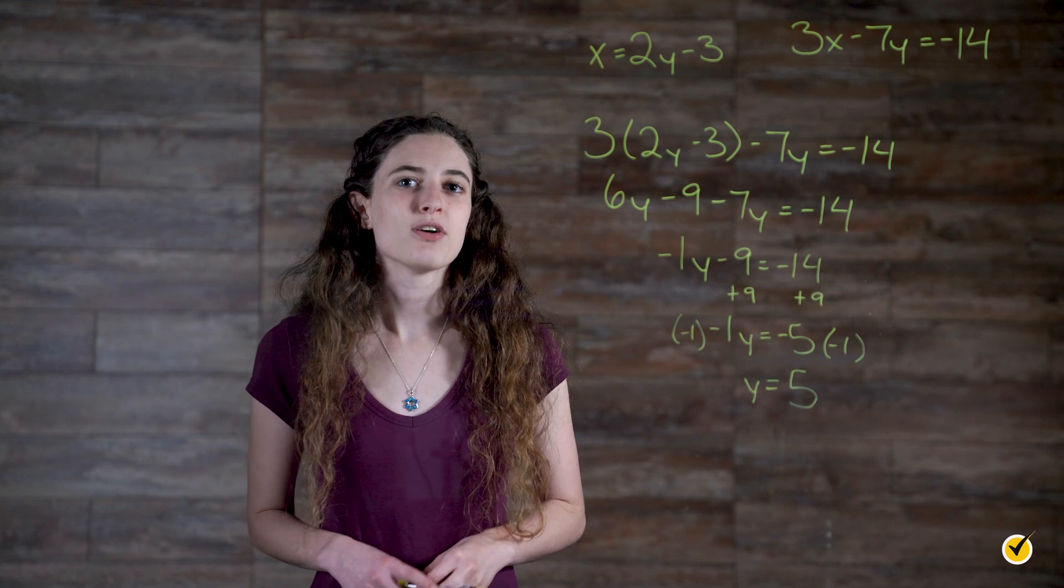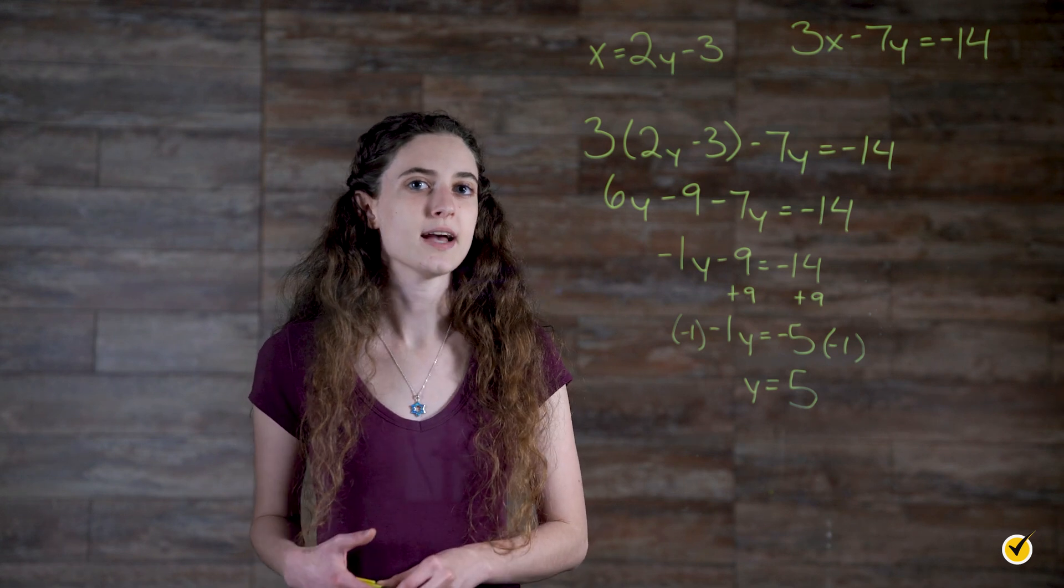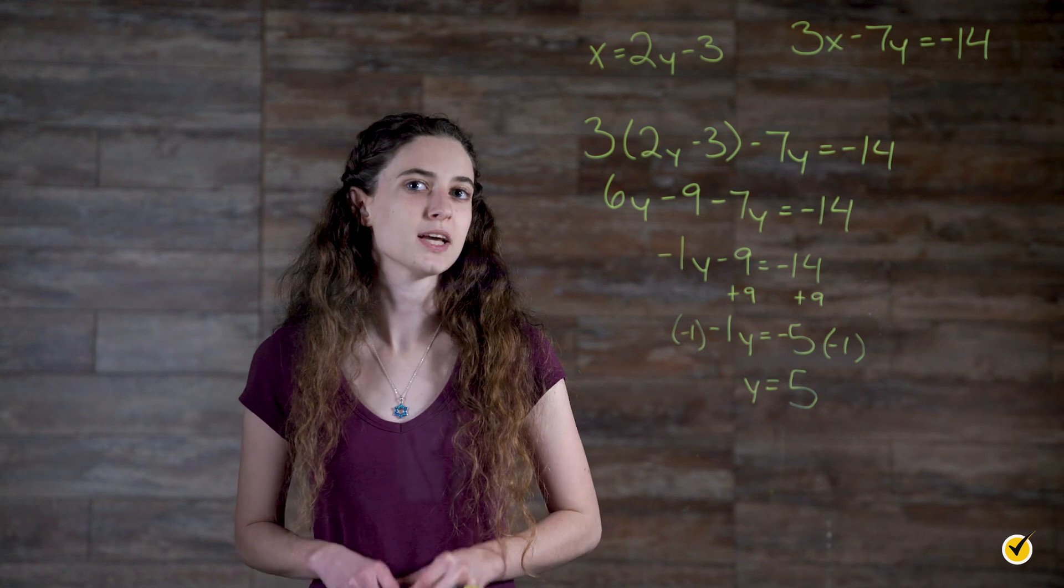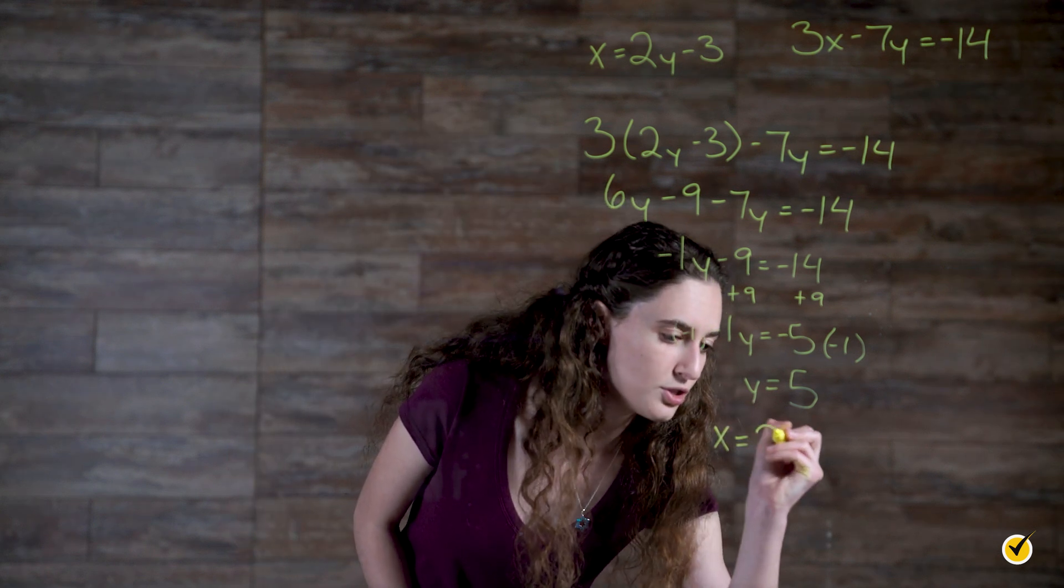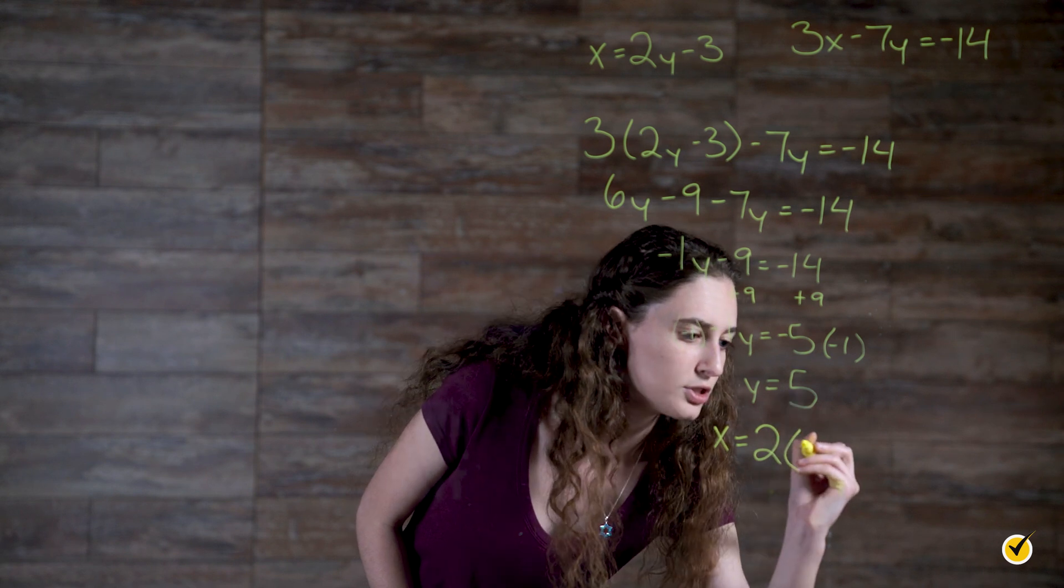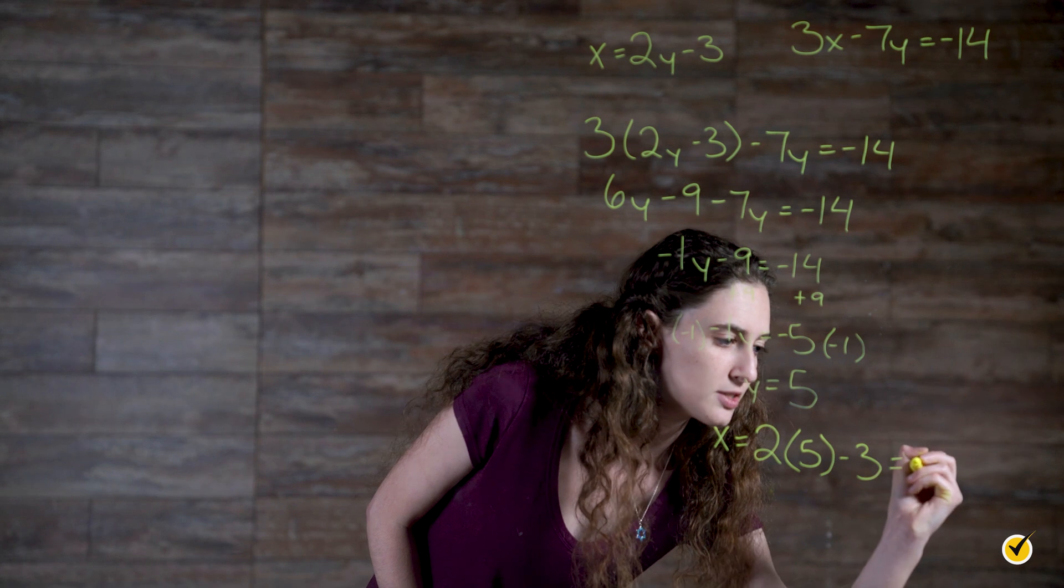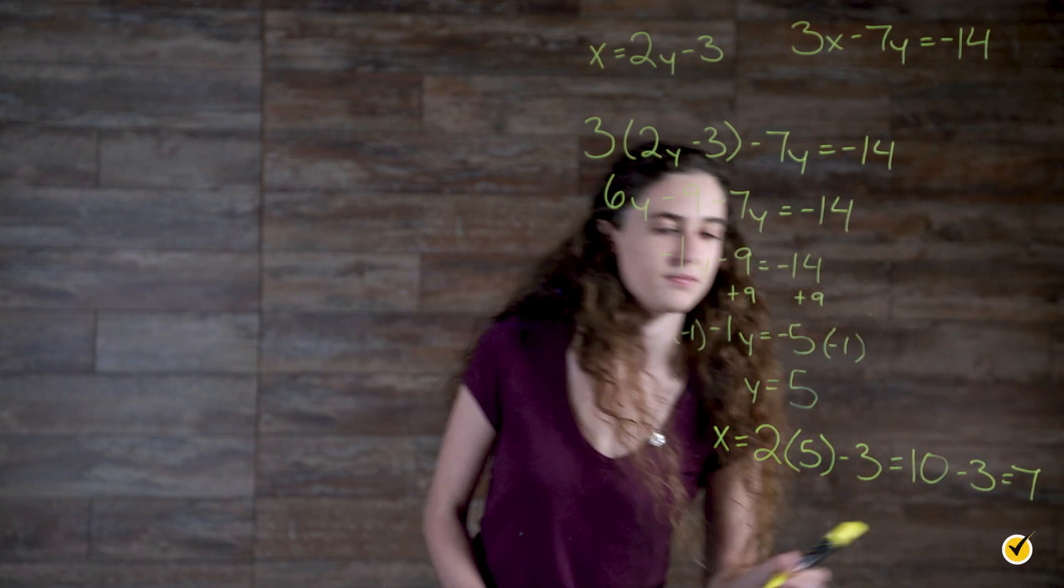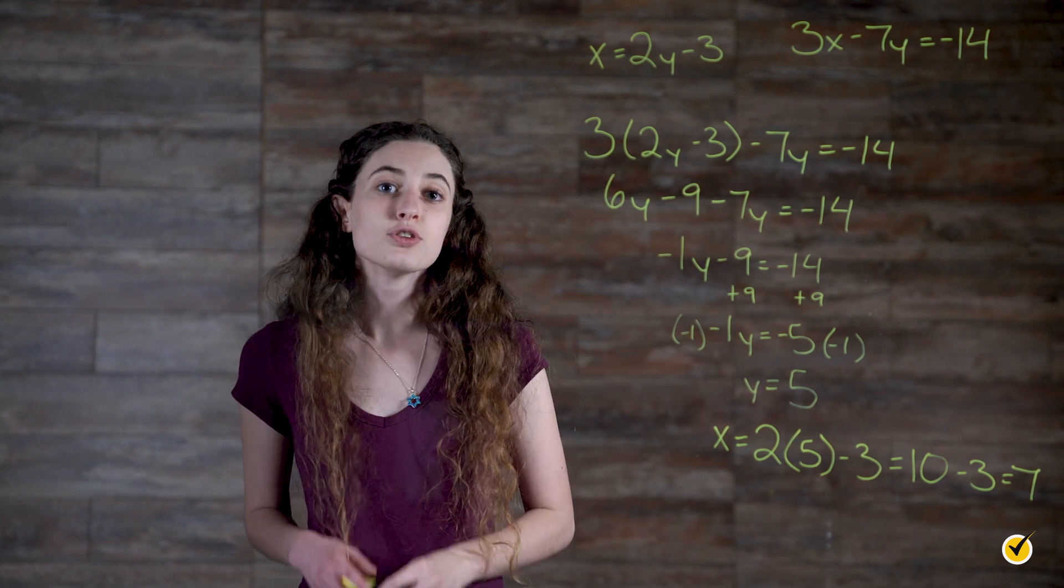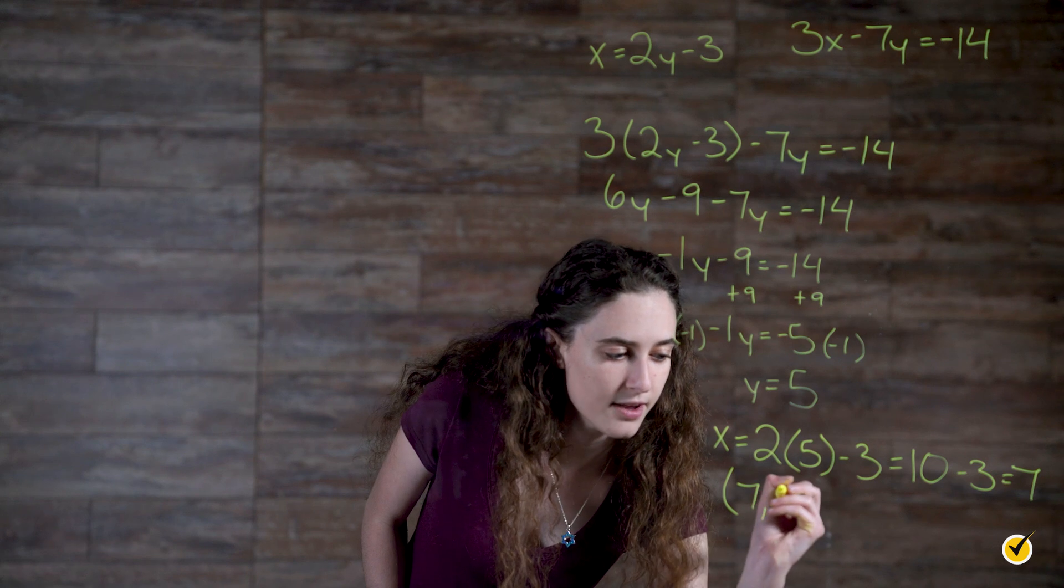The final step to solve this system is to substitute y equals 5 into the equation x equals 2y minus 3 and solve for x. x equals 2 times y, which is 5, minus 3. This gives us 2 times 5 is 10, minus 3 equals 7. The solution to the system is the ordered pair 7, 5.